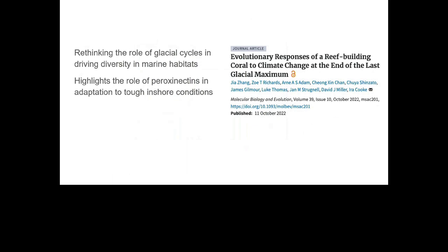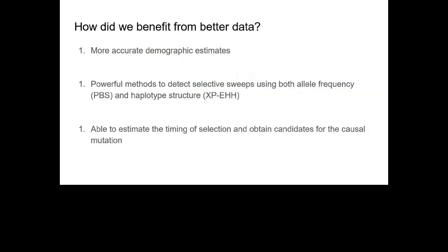We published this in MBE, and I think it had a new perspective on how glacial cycles drive diversity in marine habitats and also highlighted the role of peroxinectins. We benefited a lot from having good quality data — we could get more accurate demographic estimates, use more powerful techniques to identify real selection signals from noise, estimate the timing of selection, and even take a stab at what the causal allele might be.